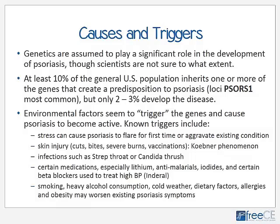Genetics are assumed to play a significant role in the development of psoriasis, though the extent is unknown. About 10 percent of the general U.S. population inherits one or more of the associated genes — the most common being loci PSORS1 — but of that 10 percent, only 2 to 3 percent actually develop the disease. There are many known environmental triggers that interact with genetic predisposition, including stress, which can cause psoriasis to flare, and any type of skin injury — cuts, abrasions, insect bites, severe burns, chemical burns, sunburns, or even vaccinations — collectively known as the Köbner phenomenon.